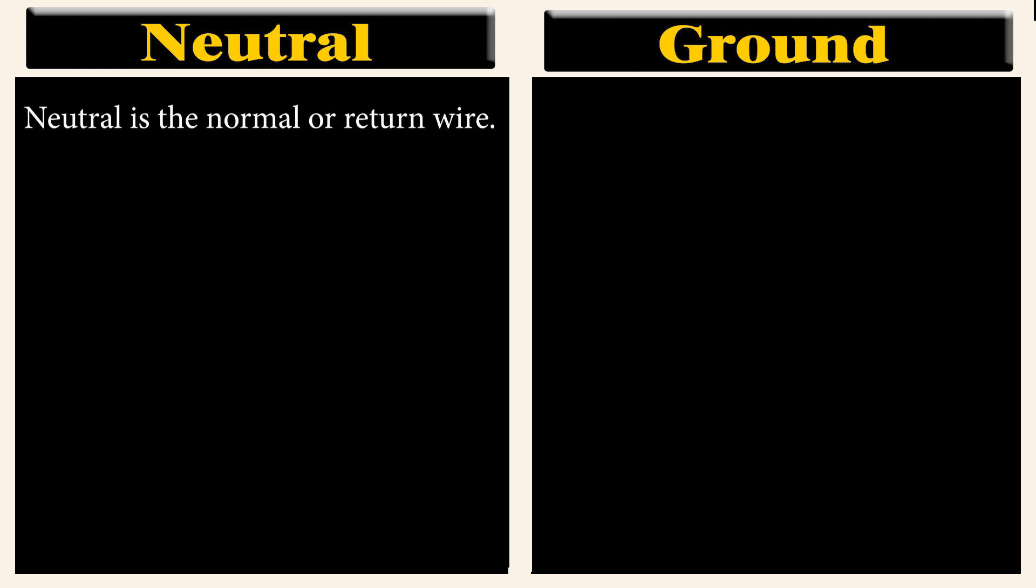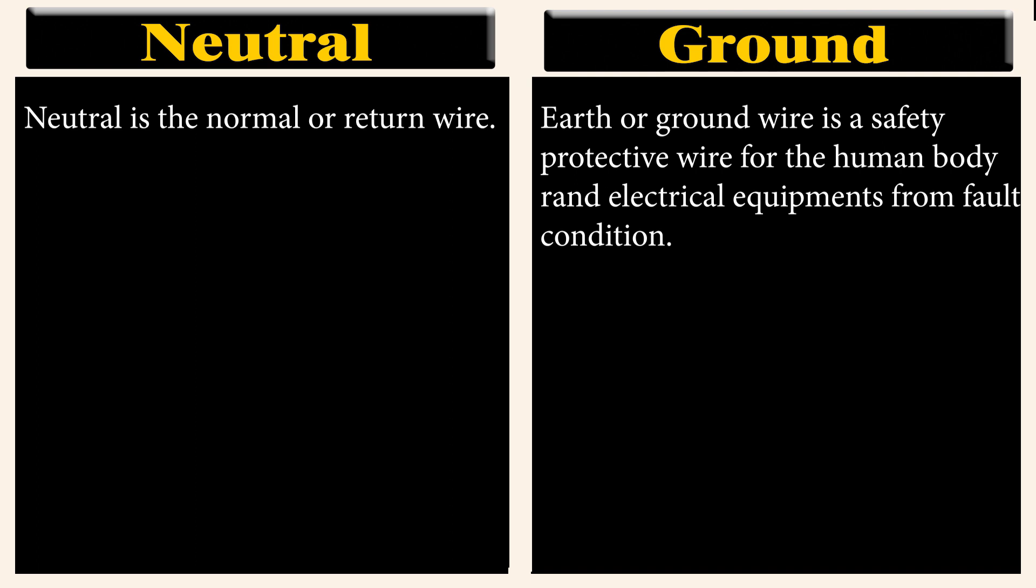Neutral is the normal or return wire. But earth or ground wire is a safety protective wire for the human body and electrical equipment.